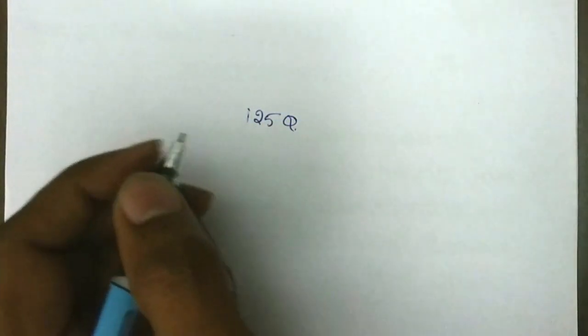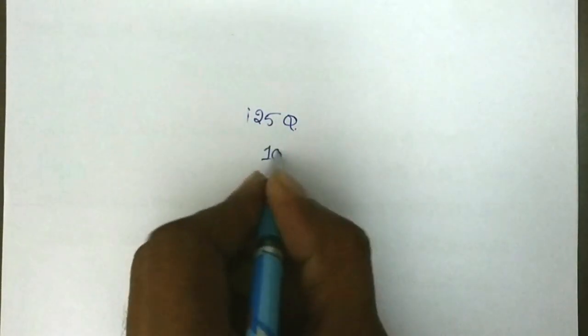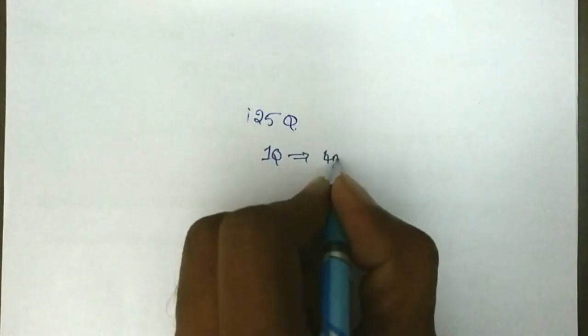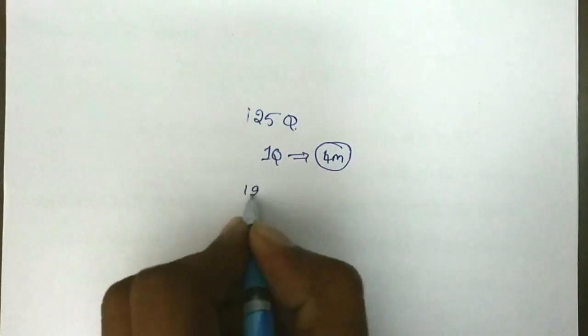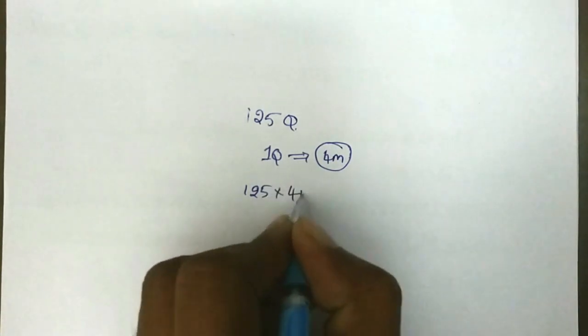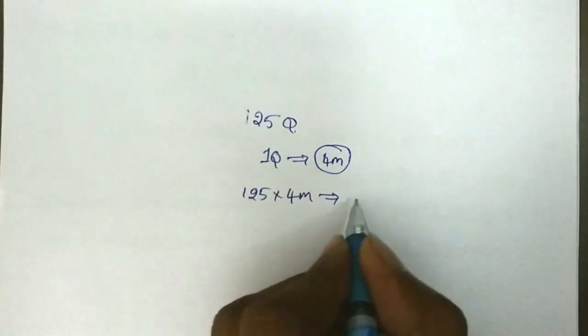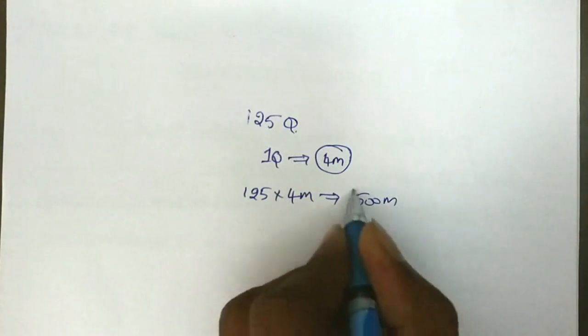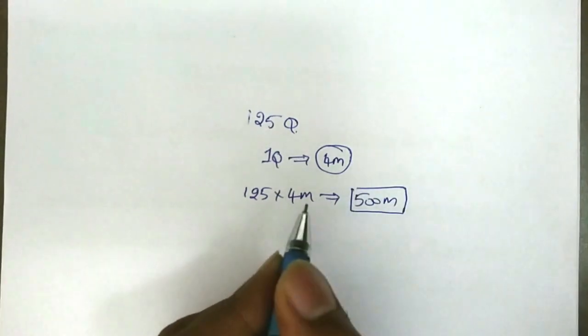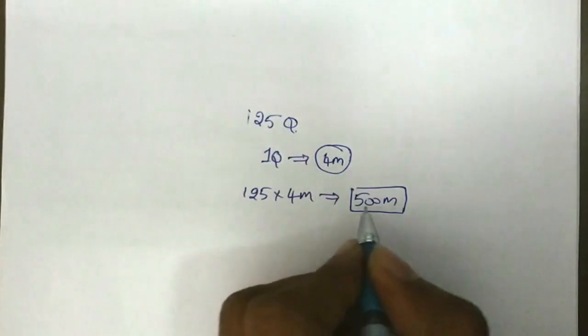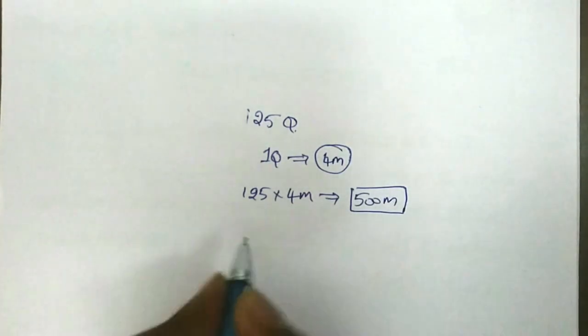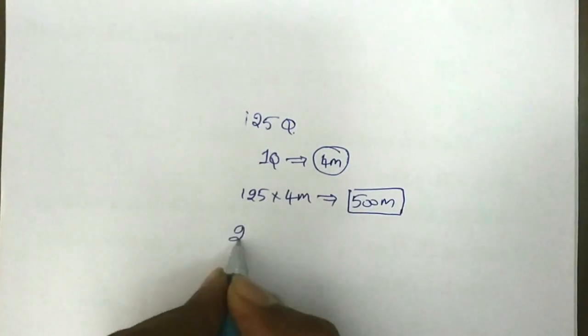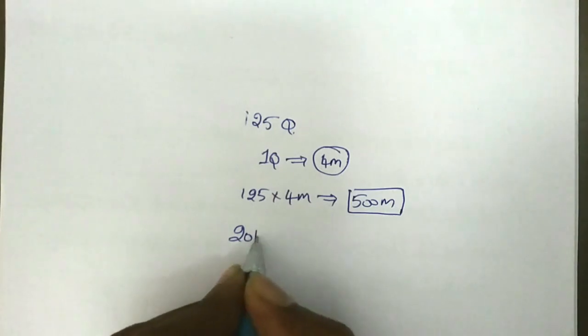We know there are 125 questions in the GPAT exam, and one question carries four marks. So total 125 questions into four marks — the total marks are 500. GPAT exam was started in the year 2010.